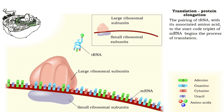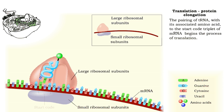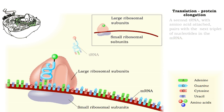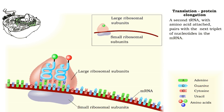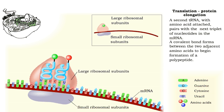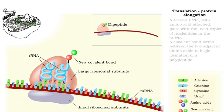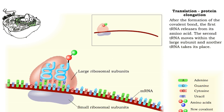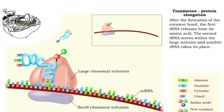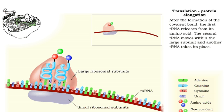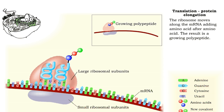Translation begins with the pairing of the first tRNA molecule with the start codon nucleotide triplet in mRNA. A second tRNA molecule, pairing with the next mRNA triplet, determines the next amino acid in the growing polypeptide. A covalent bond forms between the pair of amino acids within the large subunit. Once the new amino acid binds to the previous amino acid, the first tRNA leaves. The mRNA shifts and a new amino acid is added to the growing polypeptide, which grows as more amino acids are bonded as the ribosome moves along the mRNA.